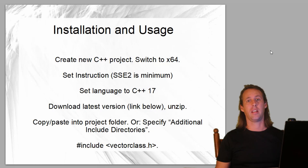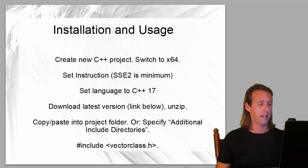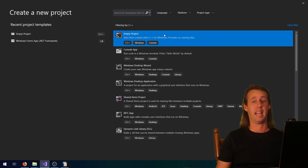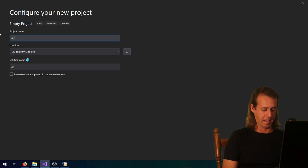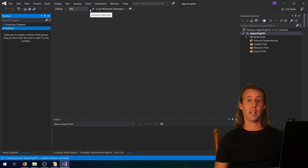Now we're going to have a demonstration on how to install and use the VCL. There are a couple of things you have to do and a couple of ways to use the library. Ultimately the objective is to include the main header vectorclass.h and give your project access to all the headers in the library. I'm going to be using Visual Studio 2019. We set up a new C++ project - click Create New Project, select Language C++, select Empty Project, click Next, name it, and click Create. The first thing you want to make sure is that you're compiling for 64 bits - click the little arrow and select X64.